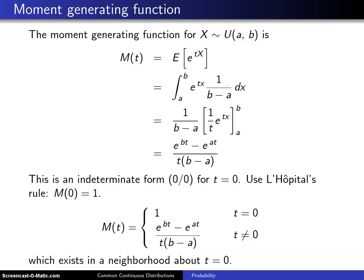The next topic is the moment generating function of a uniform AB random variable, and here it is. M of t is the expected value of e raised to the tx. That's just the definition of the moment generating function.